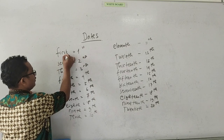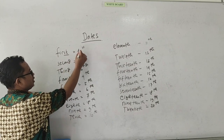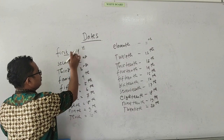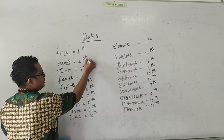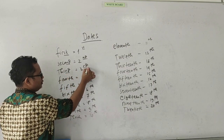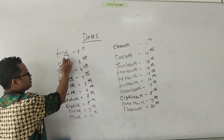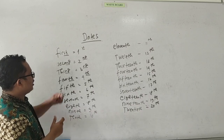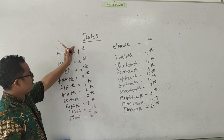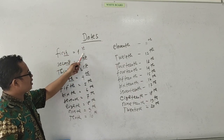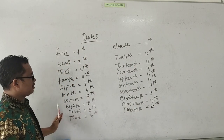Nah, di sini ada kata 'first'. Akhirannya adalah ST. Maka tanggal 1 itu disingkat dengan 1ST. ST ini diambil dari akhir kata daripada 'first'. Second, itu juga menjadi 2ND. Third, menjadi 3RD. Fourth, TH. Jadi first, tanggal 1, bisa kita singkat dengan 1ST. Tanggal 2, bisa kita singkat dengan 2ND, artinya second. Jadi jika dibuatkan 1ST, maka bacaannya adalah 'first'. 2ND menjadi 'second'. Ini adalah cara membacanya.